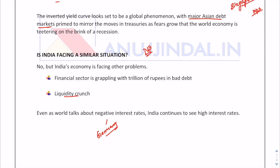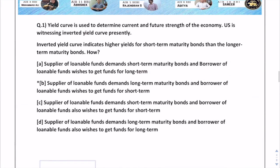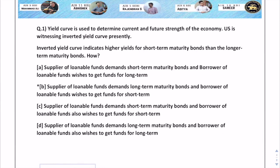We have talked about the current scenario: the US facing an inverted yield curve, the Asian economies with Singapore's spread at the lowest since November 2006, and India compared to other Asian economies. Moving forward, the MCQ question is: the yield curve is used to determine the current and future strength of the economy. The US is witnessing an inverted yield curve. An inverted yield curve indicates higher yields for short-term maturity bonds than longer-term maturity bonds. Before discussing the options, let's discuss the concept of yield curve, its types, and the information it conveys.